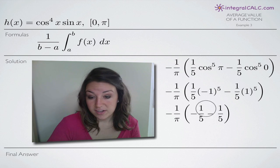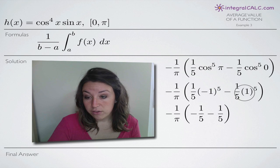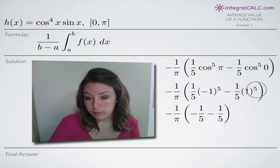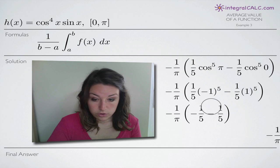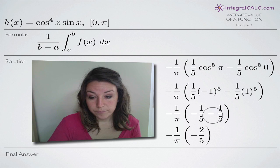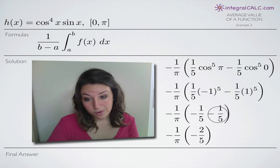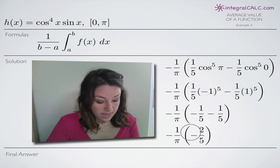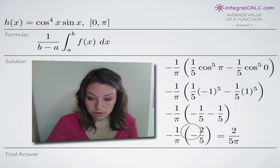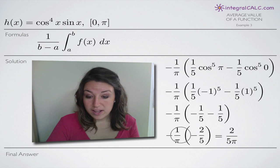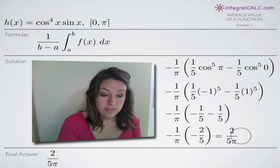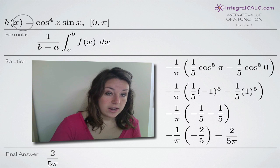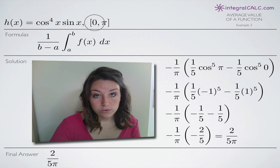Negative one times one-fifth gives us negative one-fifth for the first term, and one to the fifth power is simply one, so the second term stays negative one-fifth. Combining inside the parentheses, negative one-fifth minus another one-fifth gives us negative two-fifths. Then negative one over pi times negative two-fifths gives a positive two over five pi, and that is our final answer — the average value of h of x over the range zero to pi.